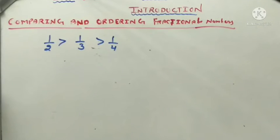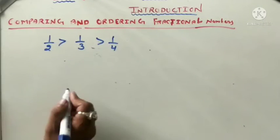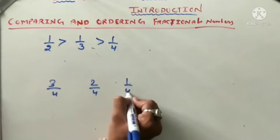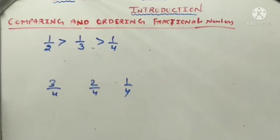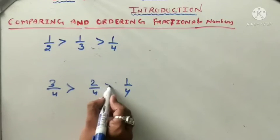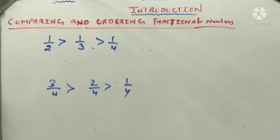When the denominators are the same, the fraction with the greater numerator is greater. For example, three upon four, two upon four, one upon four — three upon four is greater than two upon four, and two upon four is greater than one upon four.